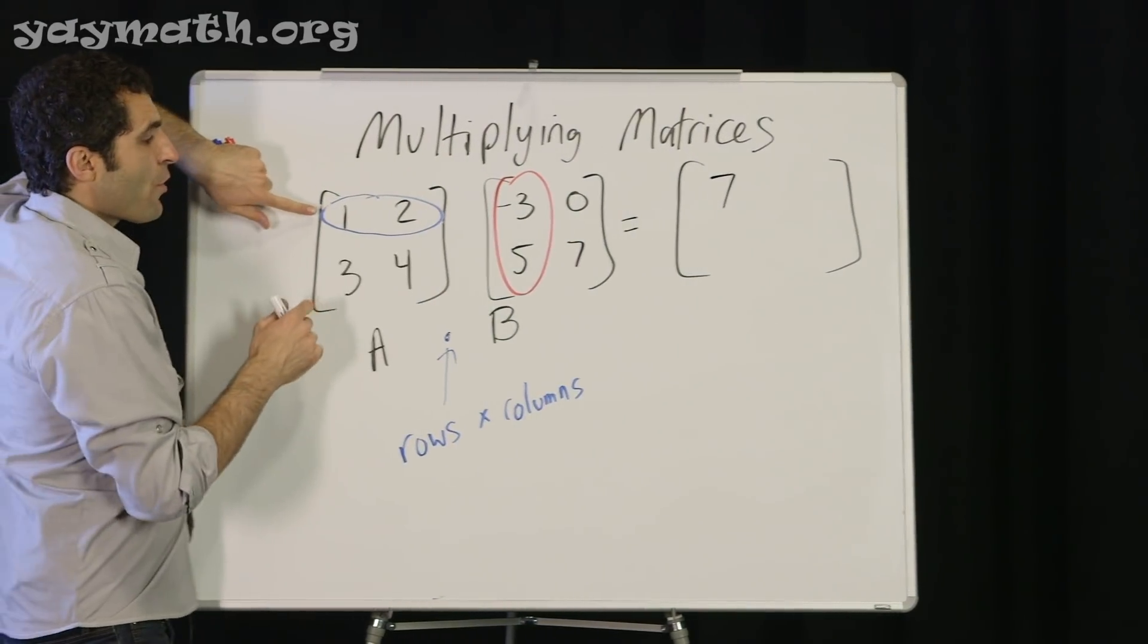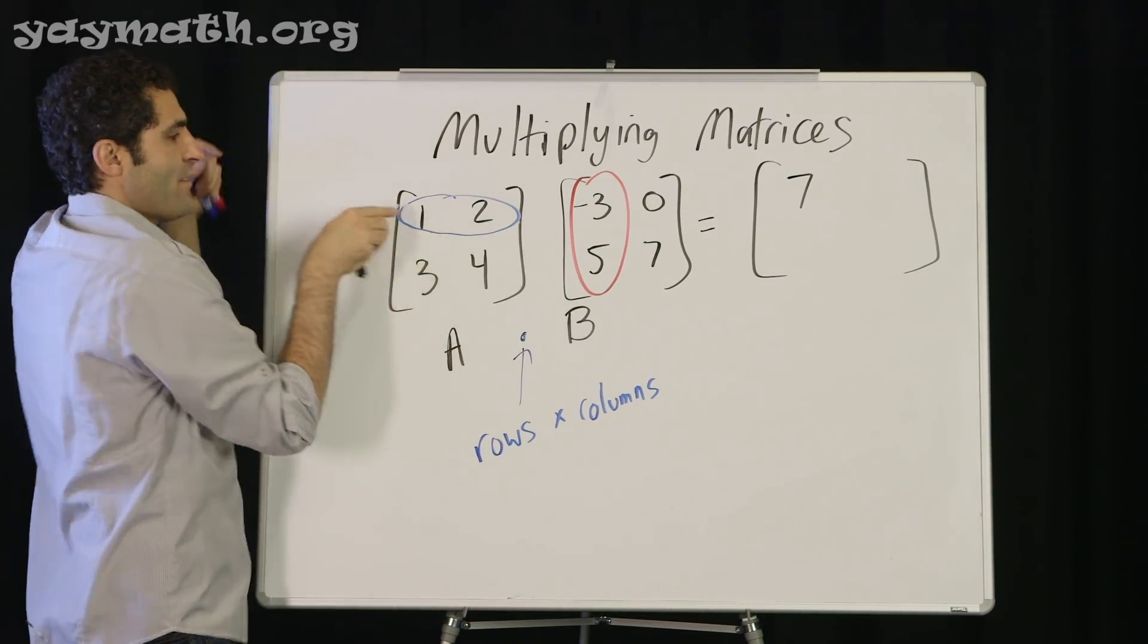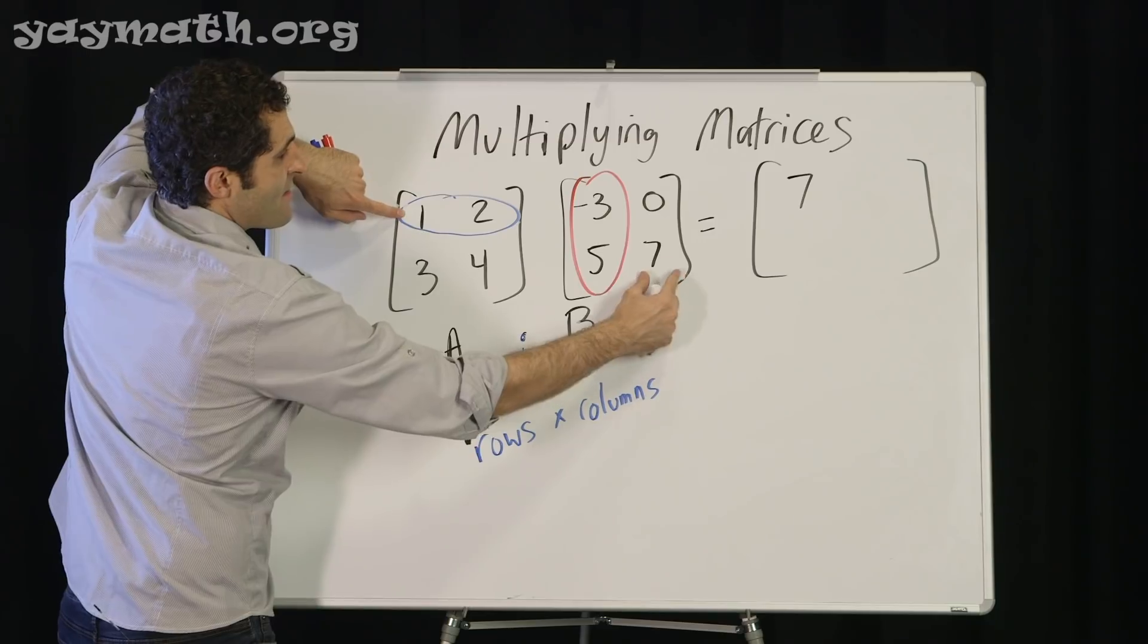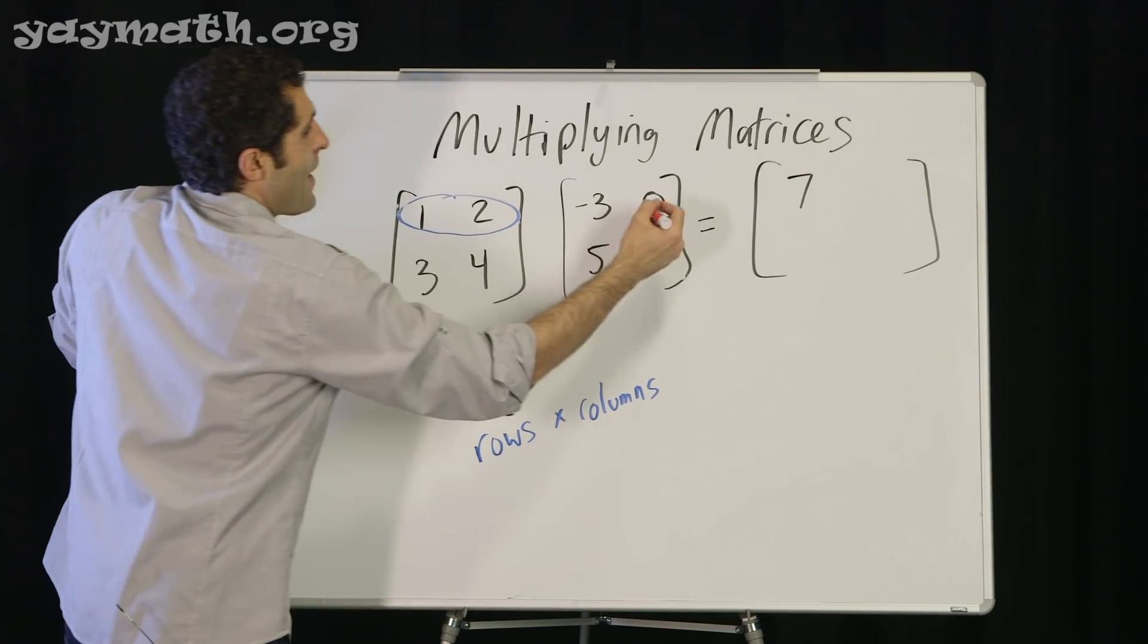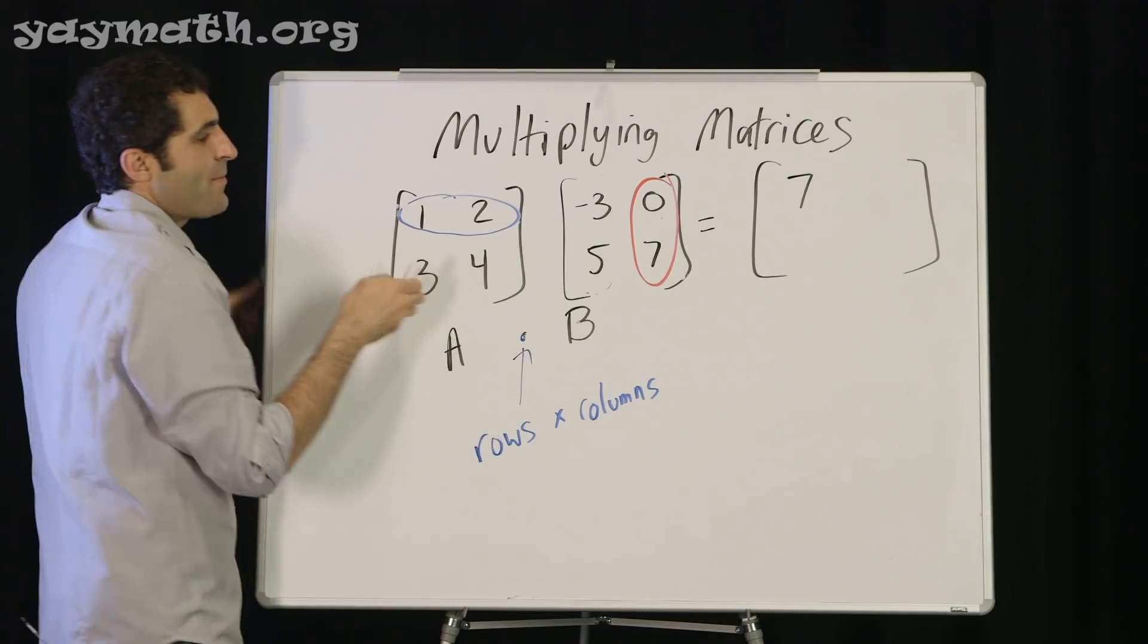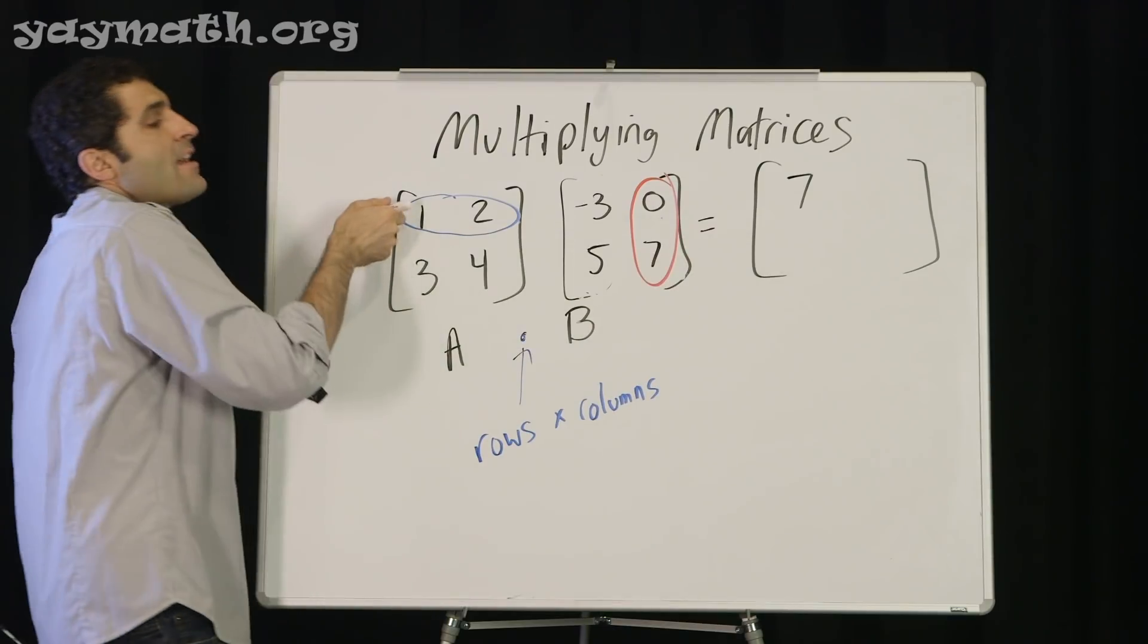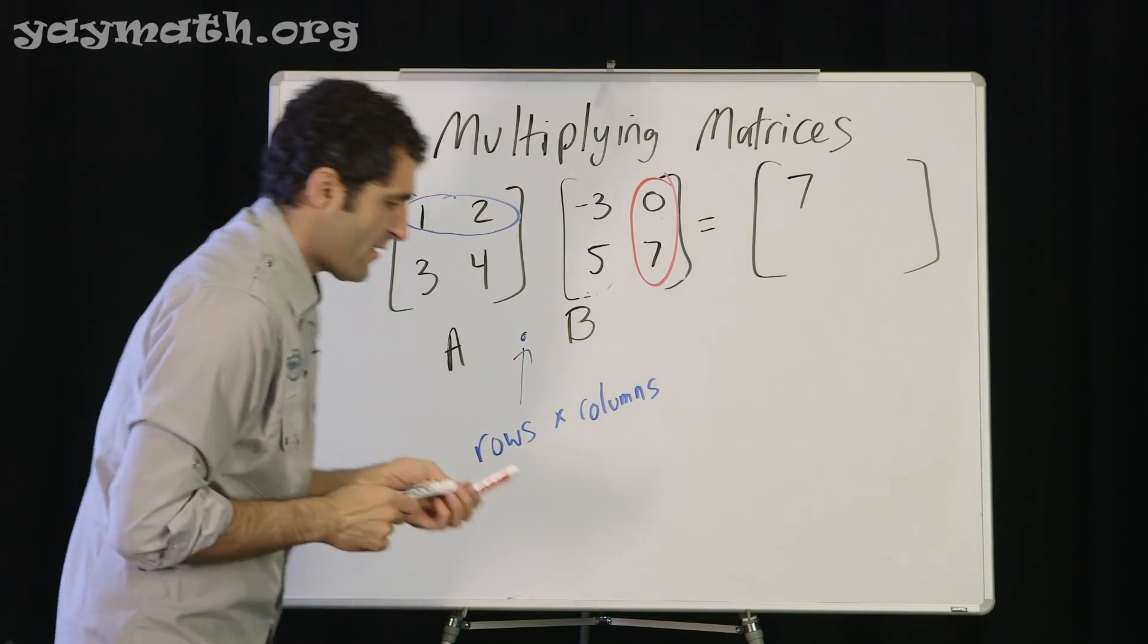Before we move to the next row, we have to exhaust every single column that follows this. So before we move down, are there other columns for us to use? Yes, there's this. Now we're talking about this row by this column. 1 times 0 plus 2 times 7. Basically, you don't want to move to the next row until you've exhausted every column for it. That's 0 plus 14, which equals 14. That would go here.